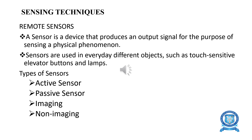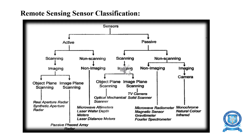Basically sensors are classified into two types: active sensors and passive sensors. Further it is classified into two types depending upon imaging and non-imaging sensors. Here the figure shows the different types of sensors and its classifications, and how it is used in remote sensing.